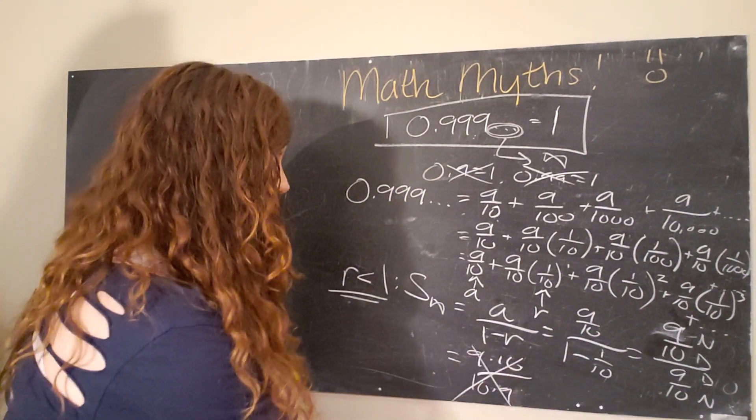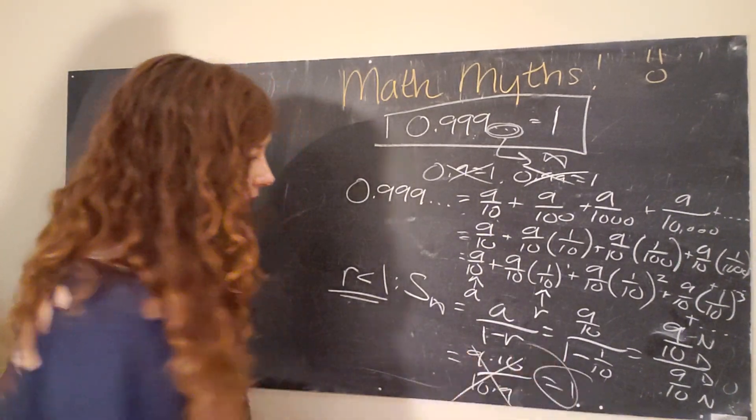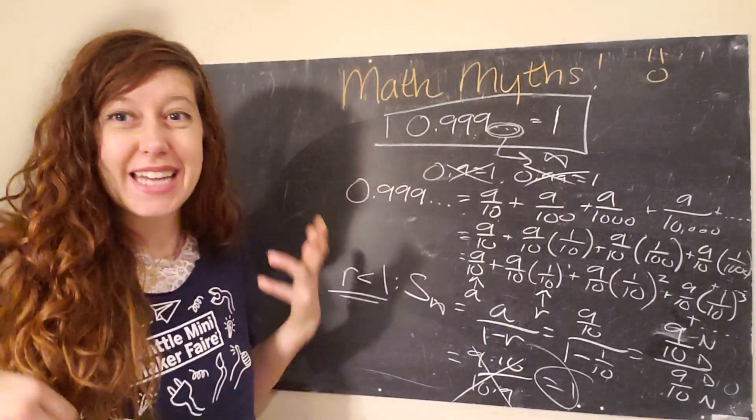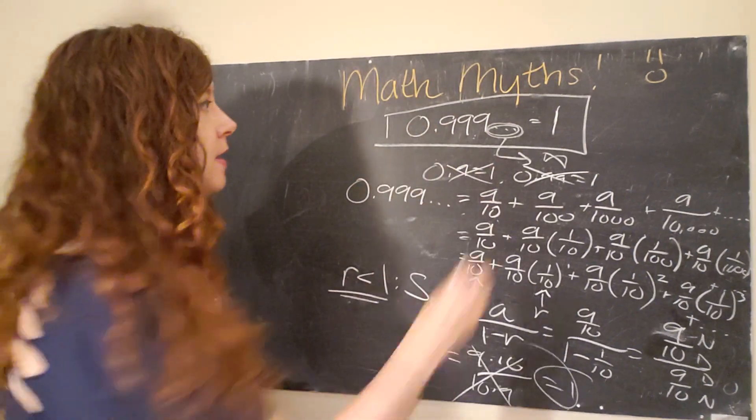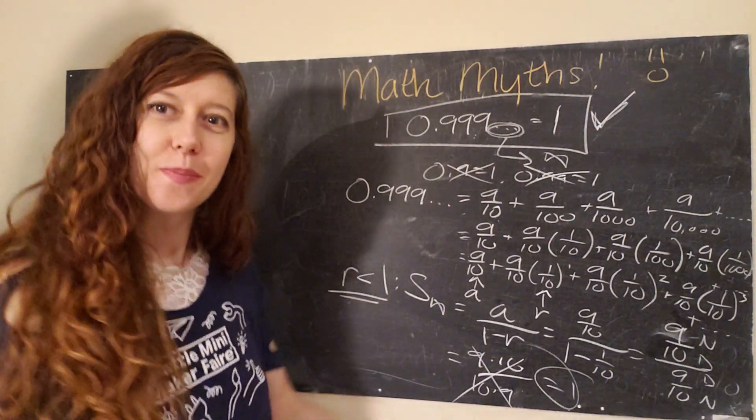Ooh, the 10s cancel, the 9s cancel, and we are left with 1. All right. So the sum of this infinite number does, in fact, equal 1.